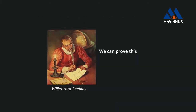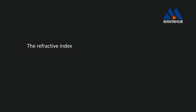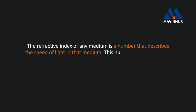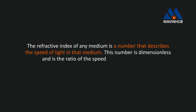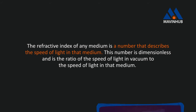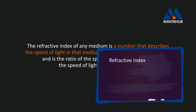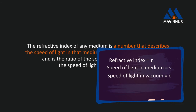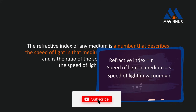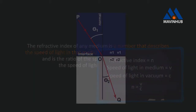We can prove this using Snell's law. To understand Snell's law, we must have a little introduction on refractive indices. The refractive index of any medium is a number that describes the speed of light in that medium. This number is dimensionless and is the ratio of the speed of light in vacuum to the speed of light in that medium. Let the refractive index of a medium be N and the speed of light in that medium be V. The speed of light in vacuum is C. According to the definition of refractive index, N equals V over C.